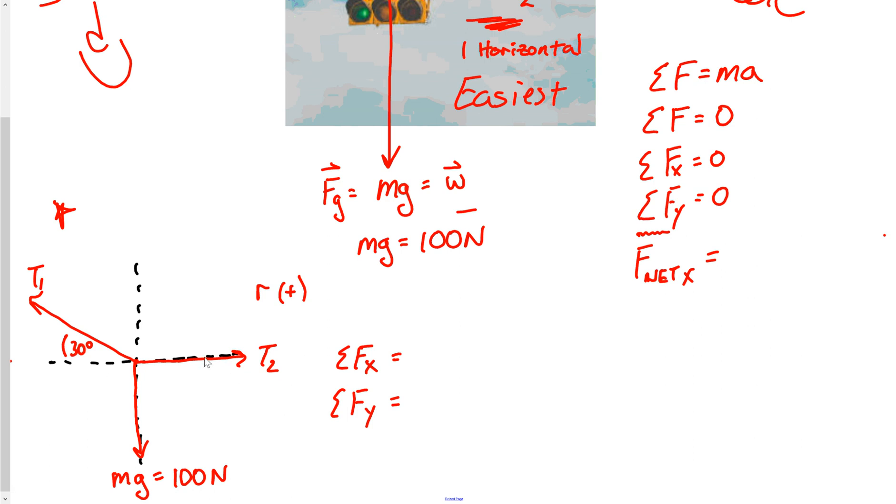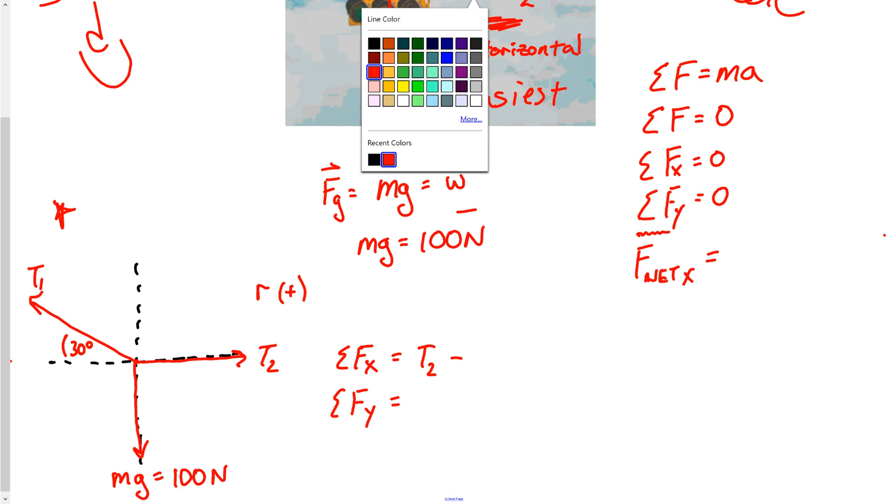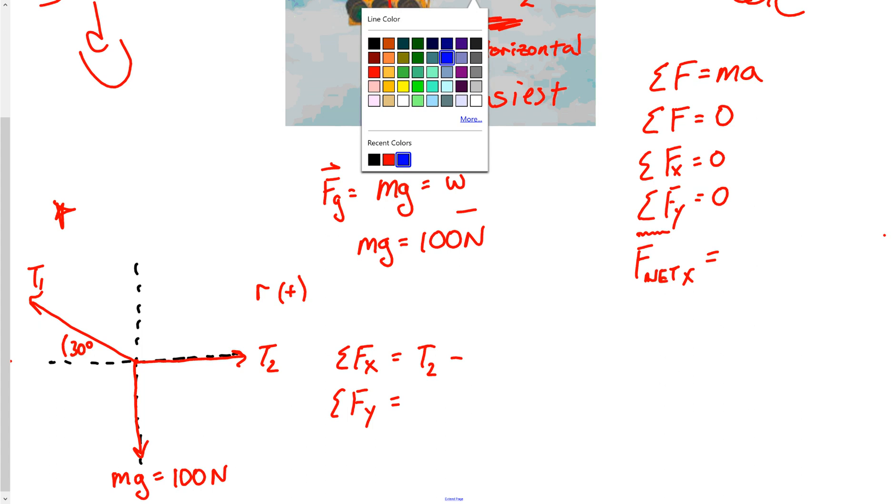So let's look at our forces in the x direction. So if we take a look at this one, we've got a T2 pointing dead to the right. So I'm going to have T2 and now subtract any forces going back to the left. And so back to the left, I've got a T1 at a 30 degree angle. Now the only part of that T1 I'm interested in, and if you have troubles with this, I've got other videos where we go through and just do trig.